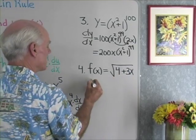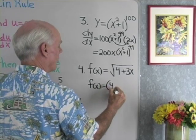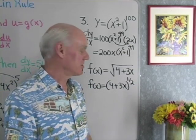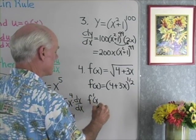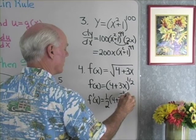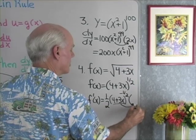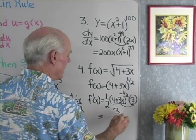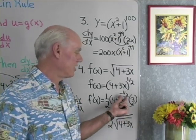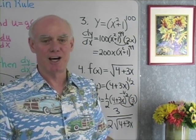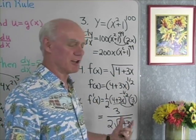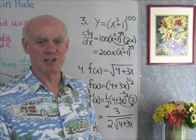Let's look at another problem. f(x) equals square root of (4 + 3x). I'll write this as f(x) equals (4 + 3x) to the 1/2 power, changing the square root to a 1/2 so I can apply my exponent property for derivatives. Then f′(x) will be 1/2 — that's the exponent — don't change the base, (4 + 3x) to a power 1 less, which is −1/2, times the derivative of the base, which gives 3. So the answer is 3 over 2 times the square root of (4 + 3x). If the original problem is written in terms of square roots, try to write the answer in terms of square roots.